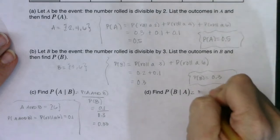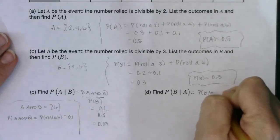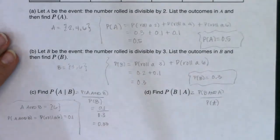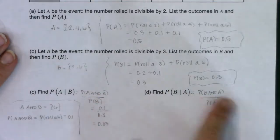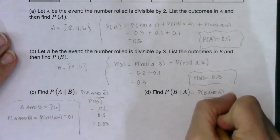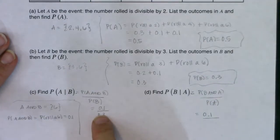I'm still going to use formula number two, the conditional probability formula, but it's going to go in a slightly different order. So I'm going to have B and A over the probability of A. All right, now the events, B and A versus A and B, they're the same thing, okay?